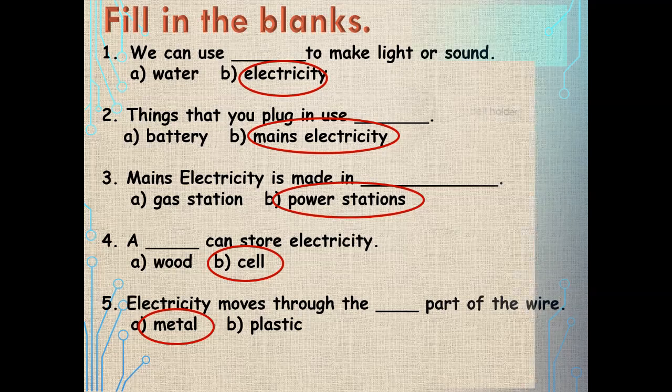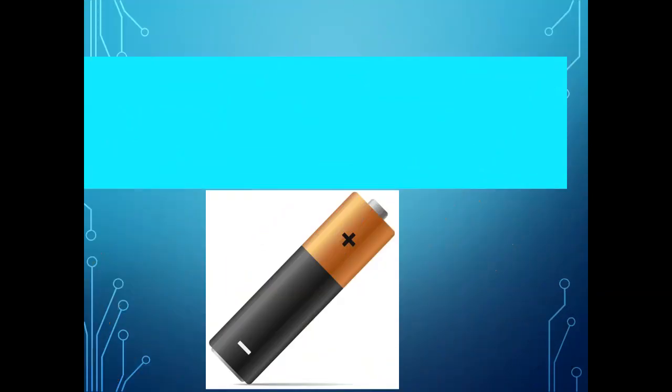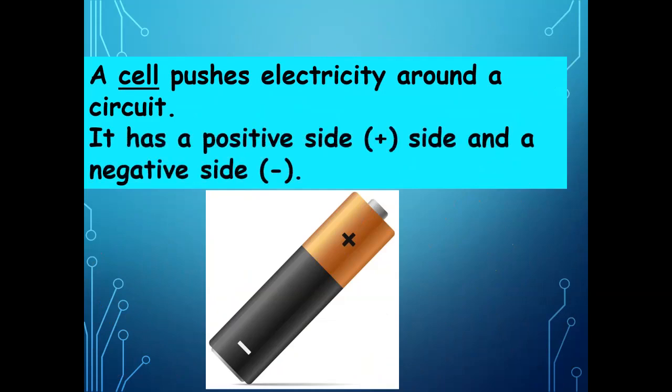Let us see what other components are used to make a simple circuit. We need a battery or a cell — it has two sides, positive and negative. Then we need a cell holder to keep the cell in, a bulb holder, a bulb, and a wire covered with plastic. A cell pushes electricity around a circuit; it has a positive side with a plus sign and a negative side with a minus sign.